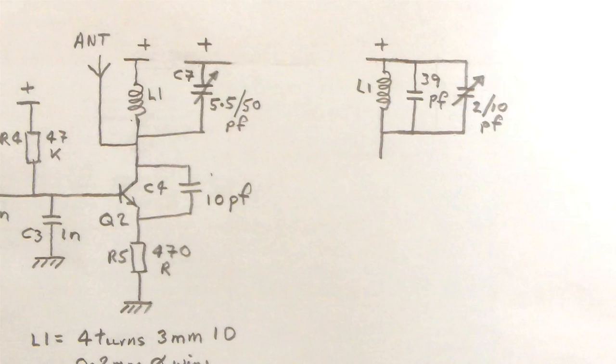This is a close-up of that circuit and you can see on the left-hand side I've got L1 and the 5.5 to 50 pF trimmer capacitor. So that's what I've actually got. And on the right-hand side I'm showing there what was on the original circuit diagram.